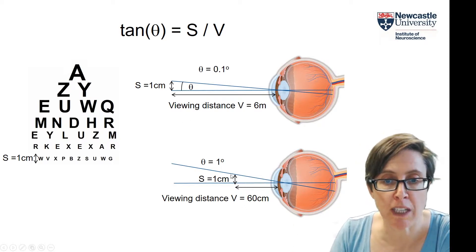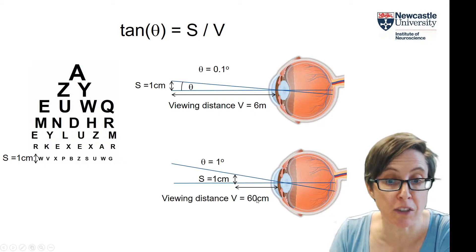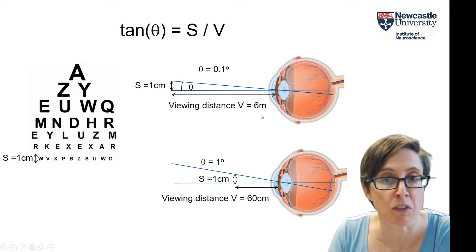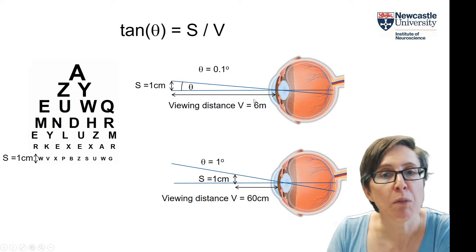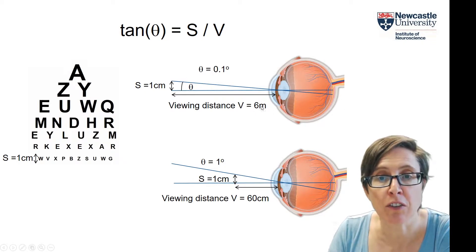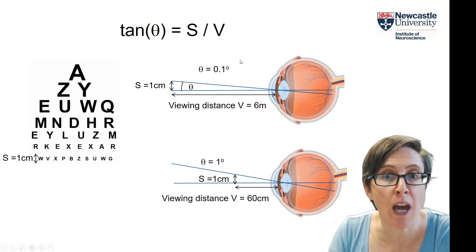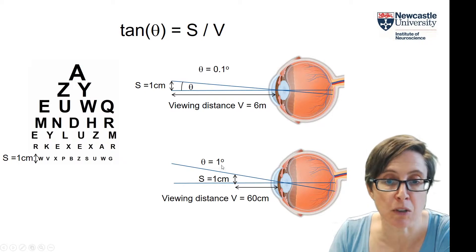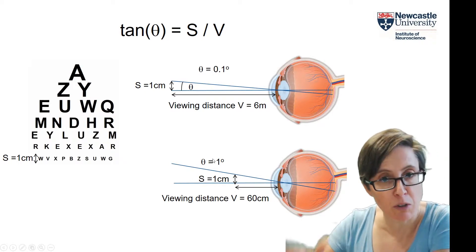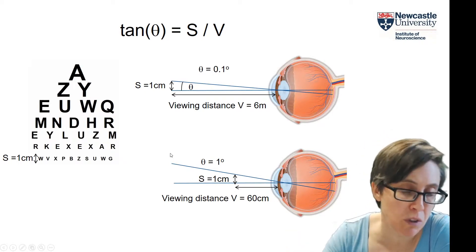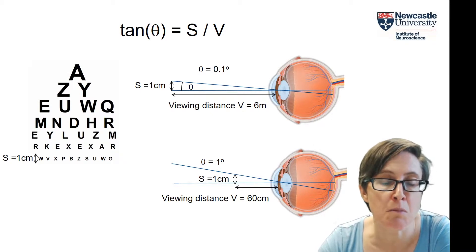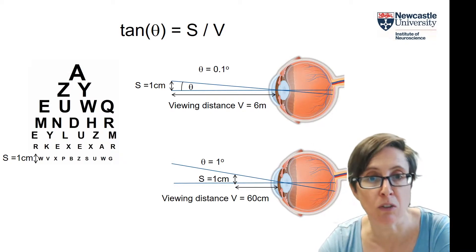Because the answer depends on how far away they are. You might be able to read letters one centimetre tall from 60 centimetres, but maybe not if you were viewing them from six metres. One centimetre at six metres is a very small angle — 0.1 degrees — whereas one centimetre at 60 centimetres is one degree, a much bigger angle, and therefore easier to see. In vision, what's always relevant is the degree rather than centimetres or metres.